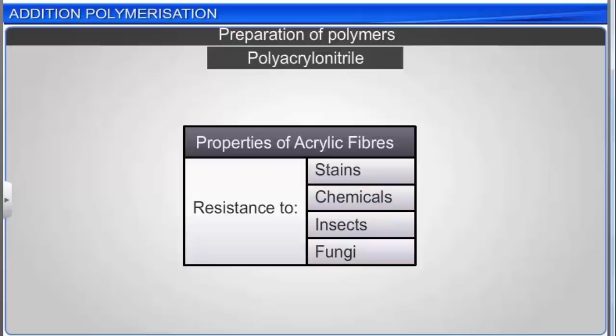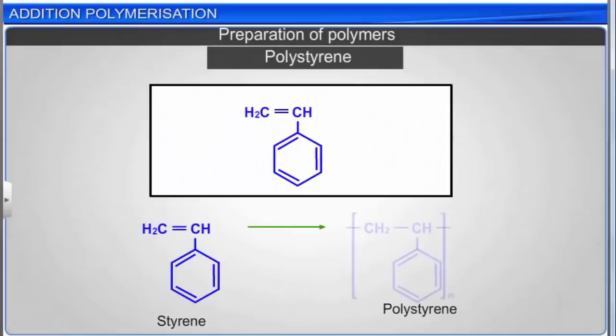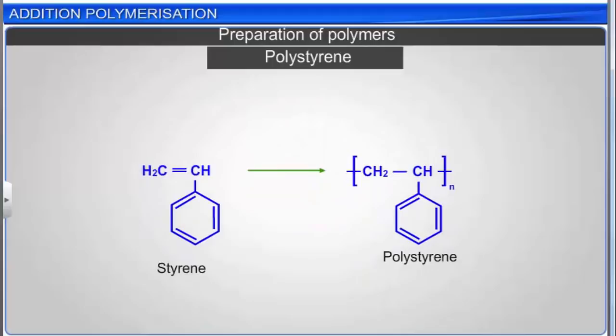Can you write the chemical equation that represents the formation of polystyrene from styrene? The formula for styrene is given here. Polystyrene is an addition polymer — this can be inferred from the carbon-carbon double bond in styrene. Polystyrene is commonly referred to as styrofoam.